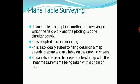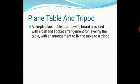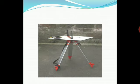Plane table surveying can also be used to prepare a new map using linear measurements taken along a chain or a tape line. A plane table and tripod together help in making a new map. A simple plane table consists of a drawing board provided with a ball and socket arrangement which levels the table and fixes it to the tripod.